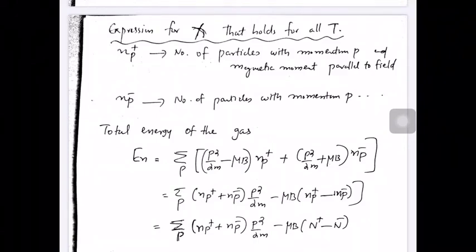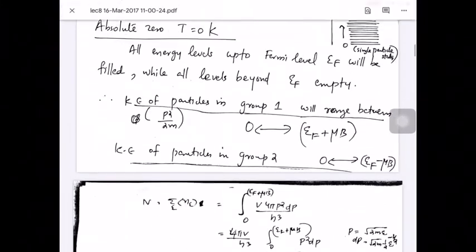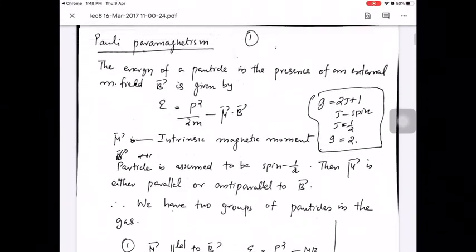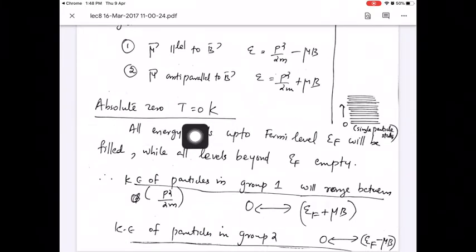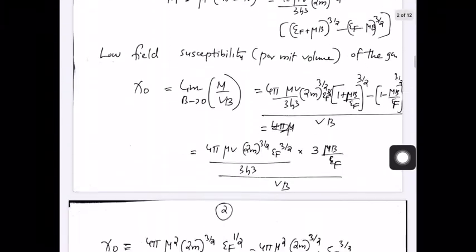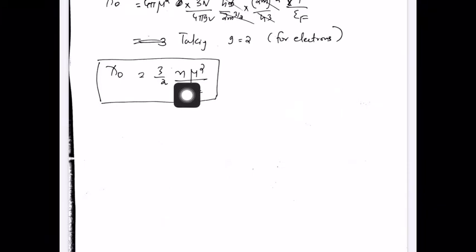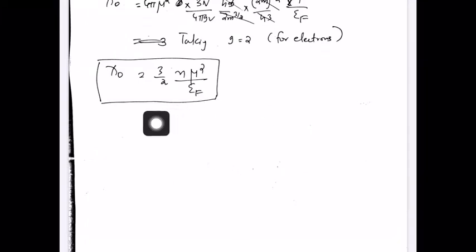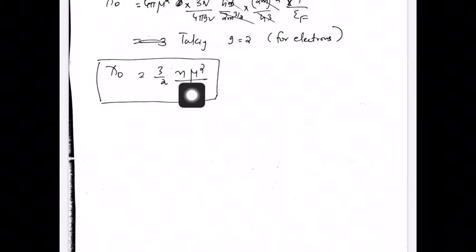Hi everybody, welcome back. In the last class, we saw the susceptibility of an electron gas at absolute zero, temperature equal to 0 Kelvin, and we got an expression ψ₀ equal to (3/2) n μ² / εf, where n is the density. So at absolute zero, the susceptibility depends upon the density and is given by this expression.